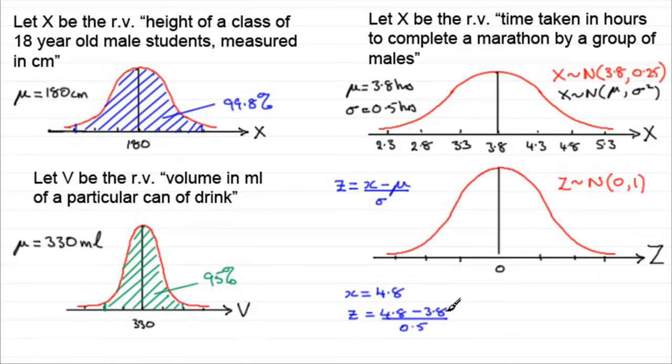4.8 take away 3.8 is 1. 1 divided by a half is 2. So z equals 2. What we're saying is that if we were to come down from this value here, 4.8, just project down, it would come down onto this graph at this second value in. This is z equals 2, signifying that the 4.8 is two standard deviations above the mean.